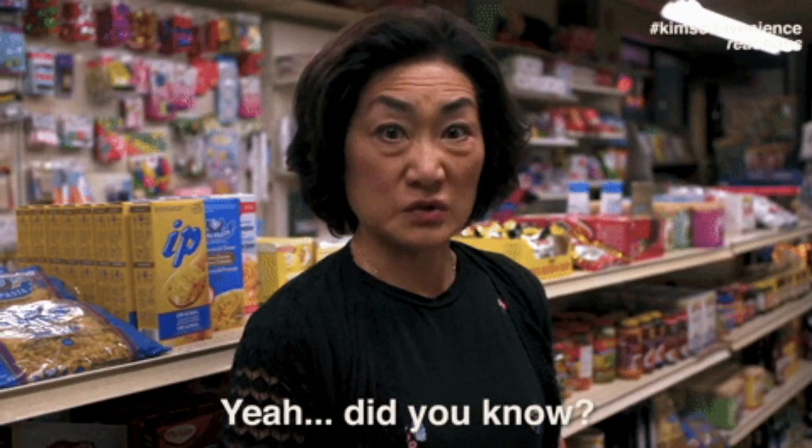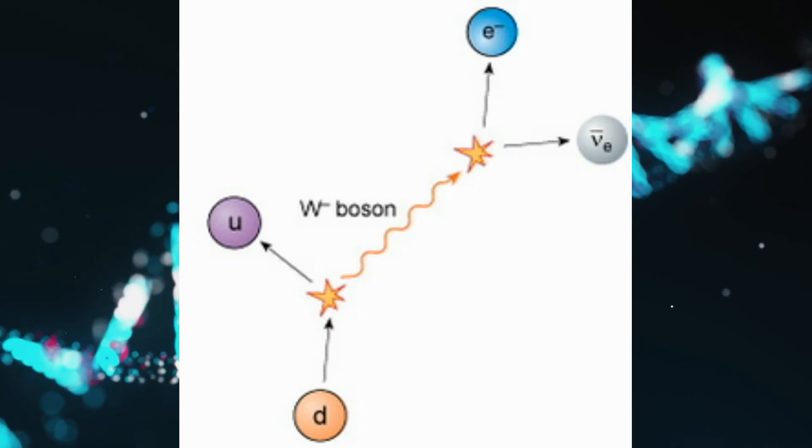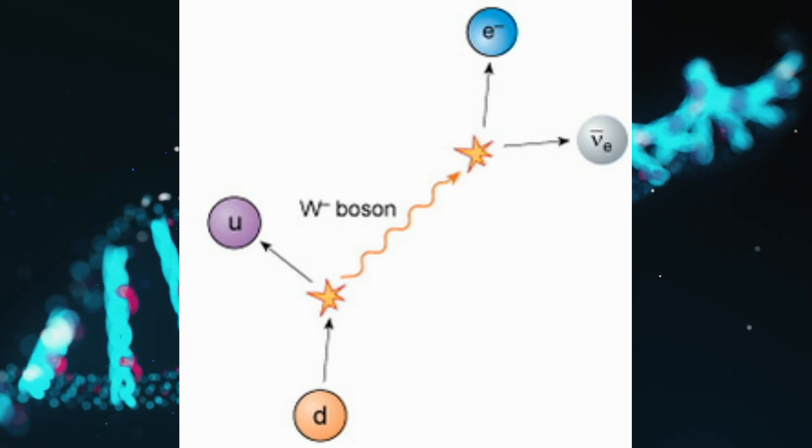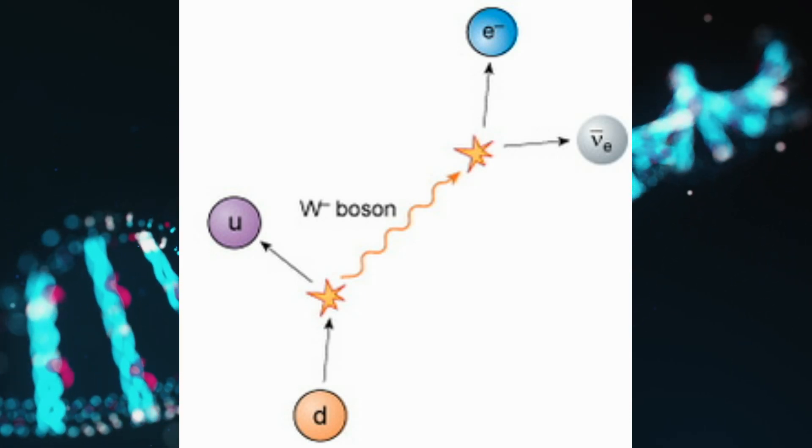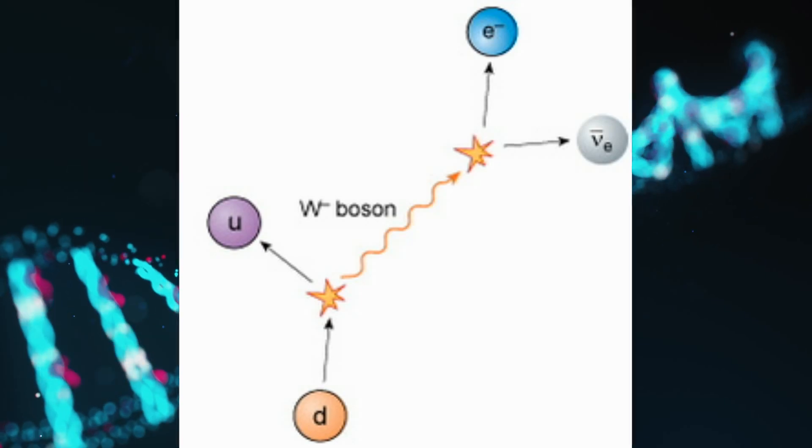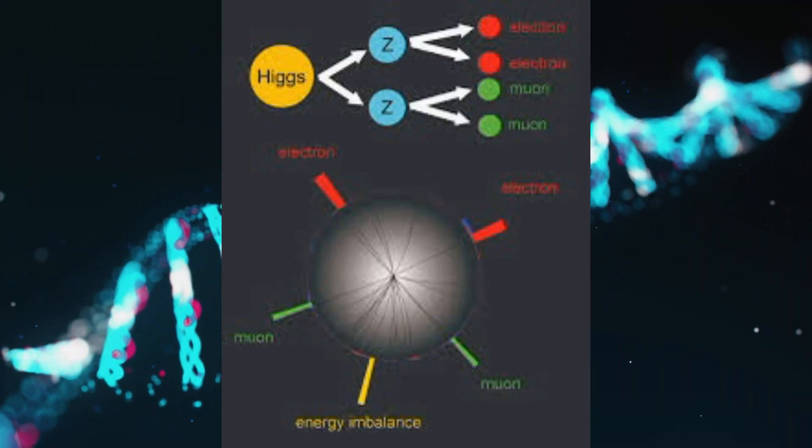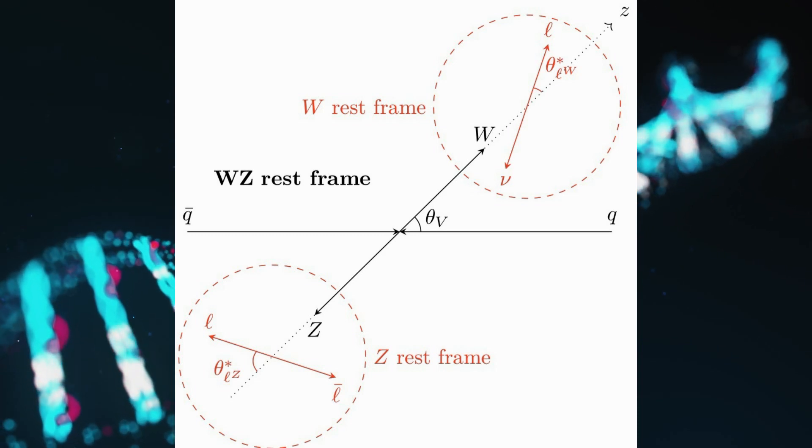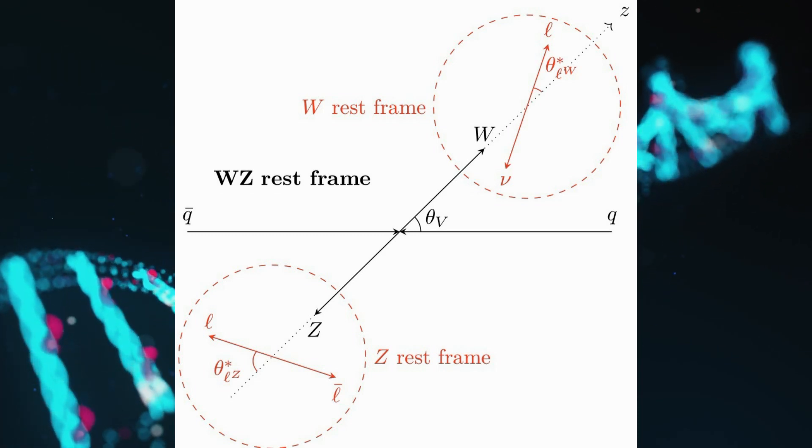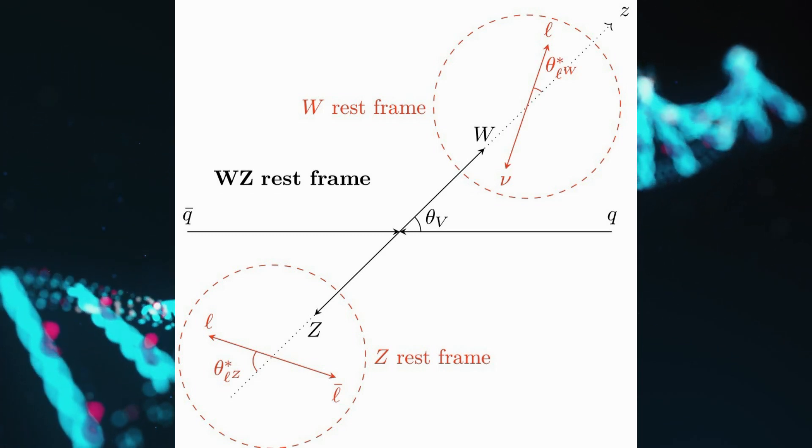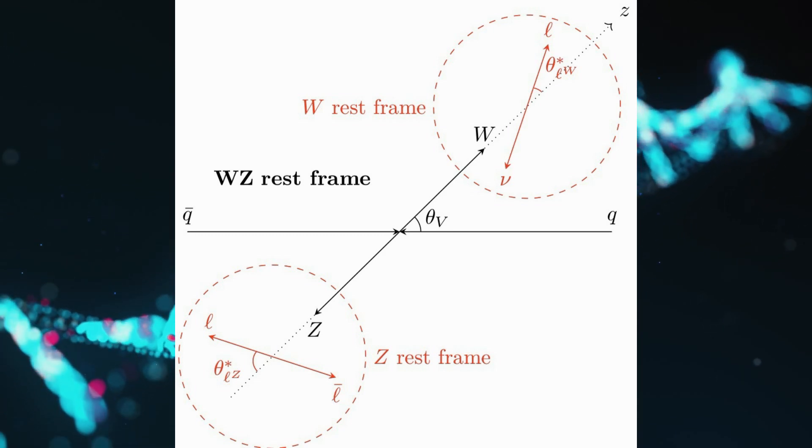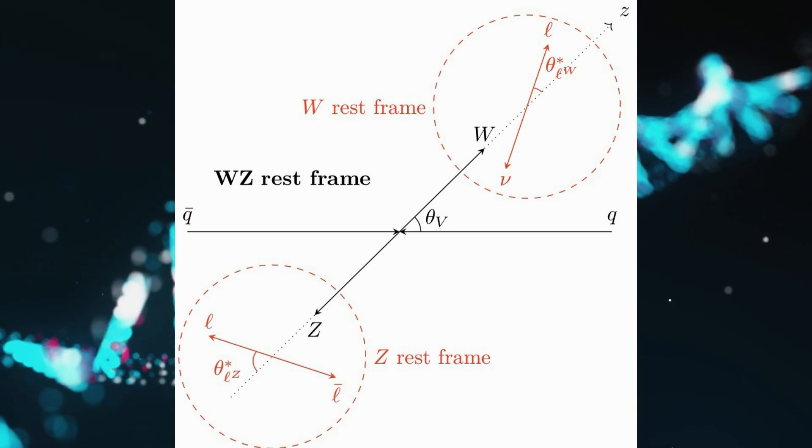Did you know? The W and Z bosons are responsible for mediating the weak nuclear force, responsible for processes such as beta decay. The W boson is a fundamental particle. Together with the Z boson, it is responsible for the weak force, one of four fundamental forces that govern the behavior of matter in our universe. Particles of matter can interact by exchanging these bosons, but only over short distances.